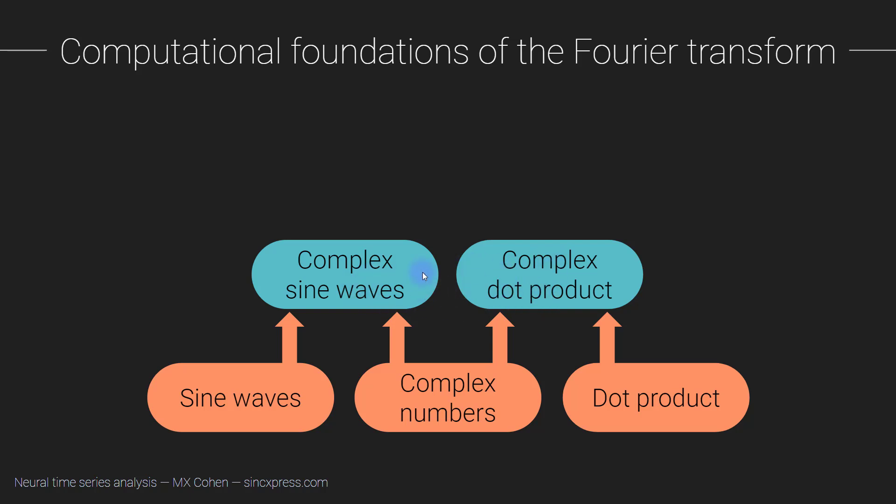And then what do we do here? You guessed it, we combine these two things—complex sine waves and a complex dot product—and that actually leads to a Fourier coefficient. That is the entire goal of the Fourier transform. The purpose of the Fourier transform is to obtain the Fourier coefficient.